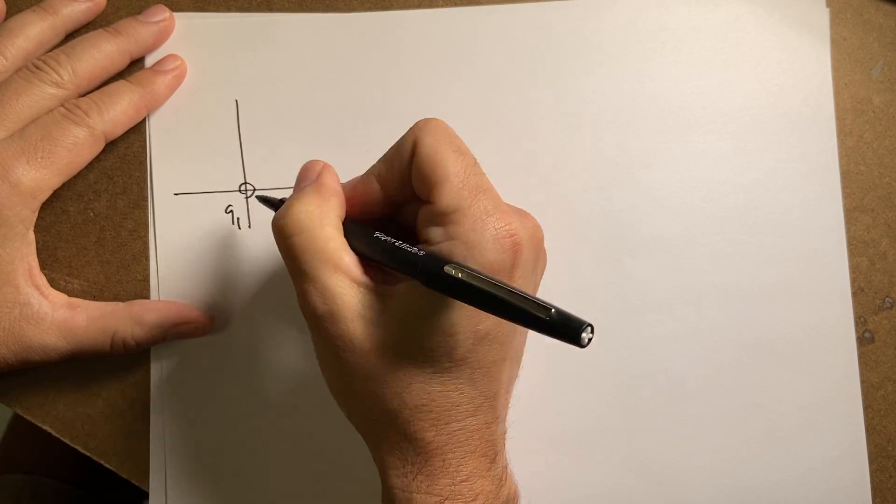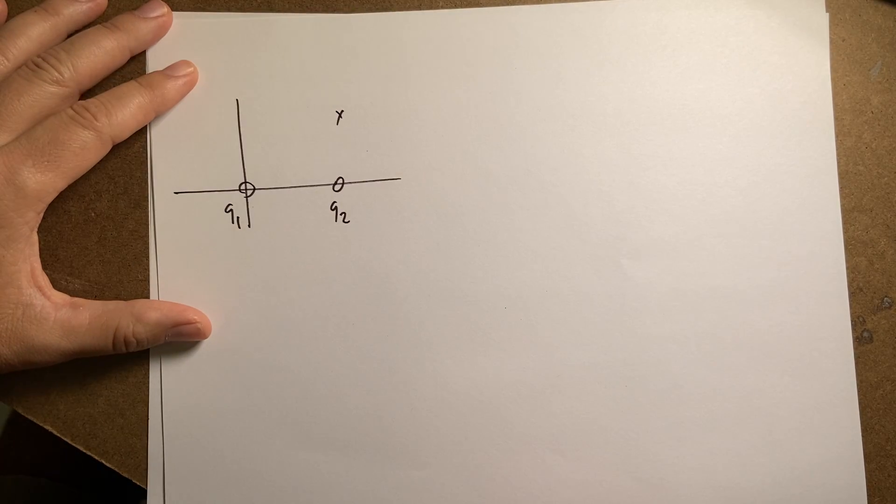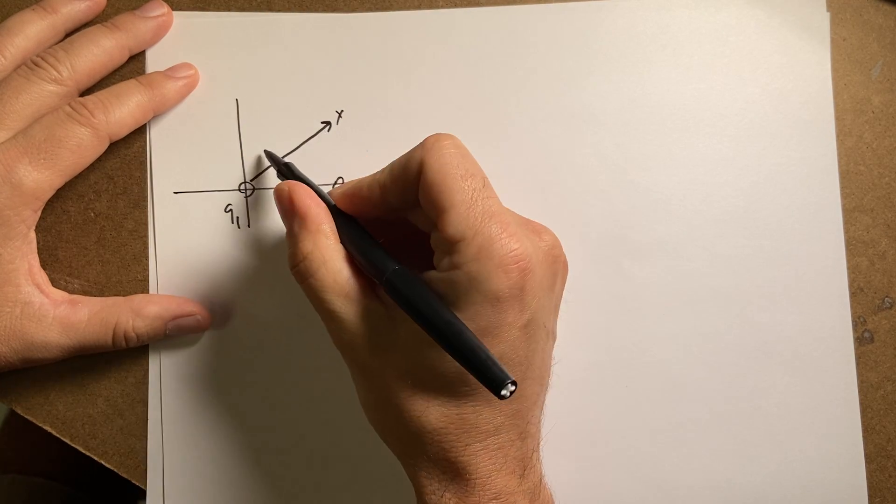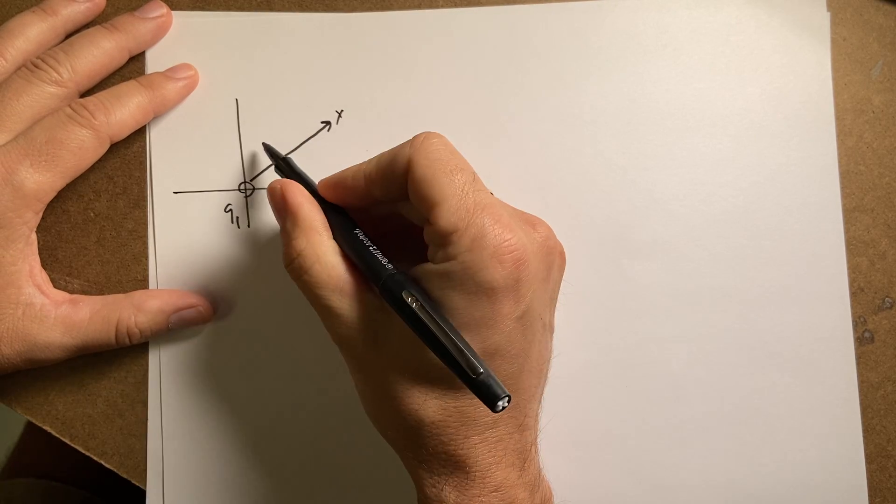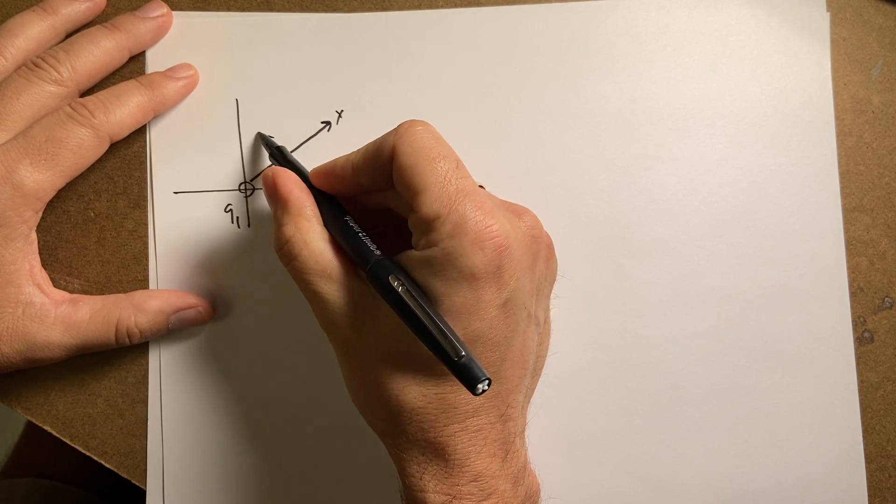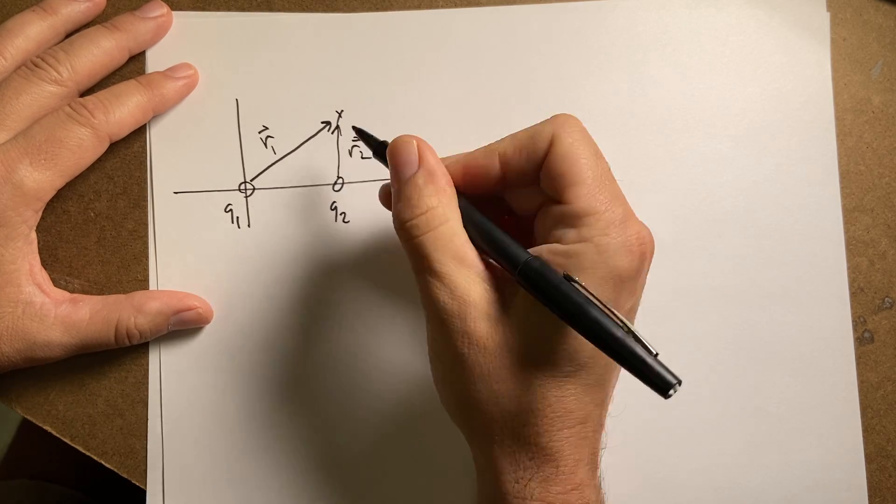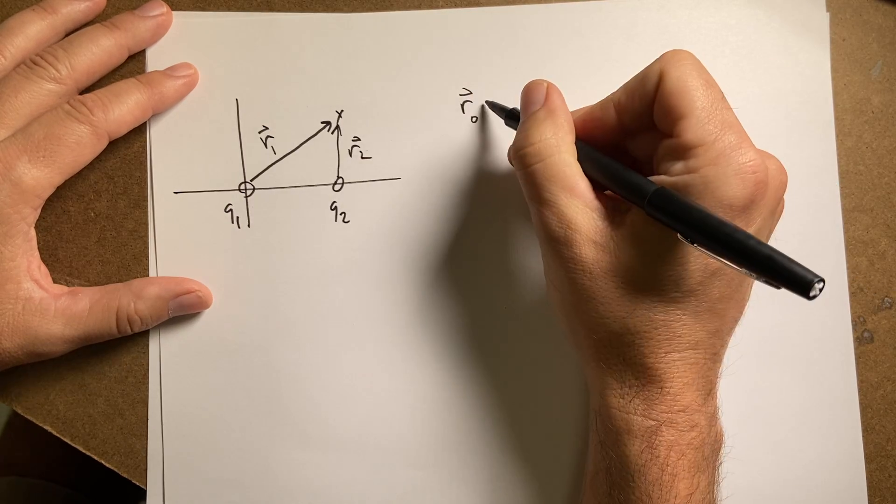So here's Q1, here's Q2, and there's my observation location. So I need some vectors here. I need this vector. I need that distance. I don't actually need the vector. I'll call this R1, and I'll call this R2. So R1, and let's call this R0, is the observation location.